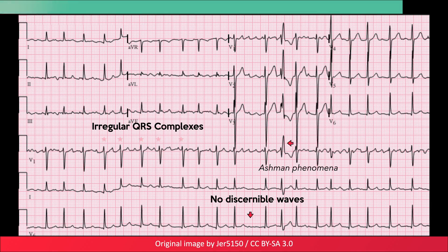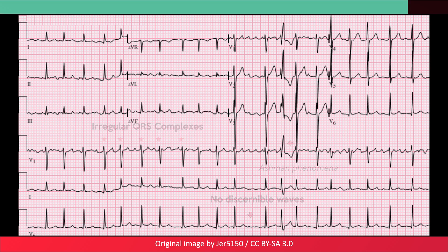Here is one final example of atrial fibrillation. I would just like to highlight something peculiar in the precordial leads. What we can see is a right bundle branch block pattern, but in a single beat. This curious finding is referred to as Ashman phenomenon.